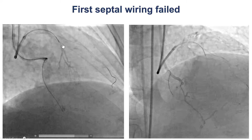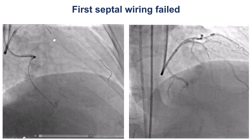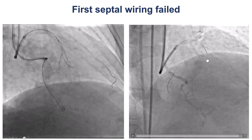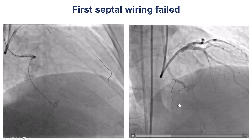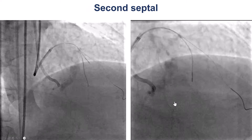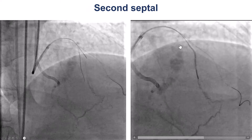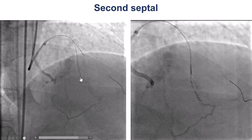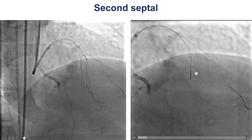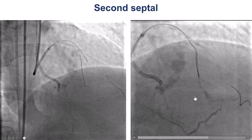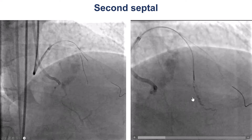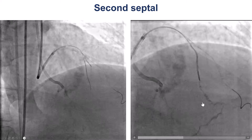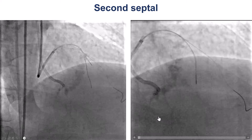We tried to go through the first septal, but selective injection didn't really show a good connection, and sure enough, when we tried to cross it, we were unable to get through. We then tried to go through the second septal and also had difficulty when we tried to surf. However, once we did a selective injection, we saw a nice connection despite tortuosity and high-frequency curves, with a continuous connection going to the PDA.